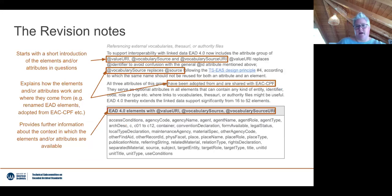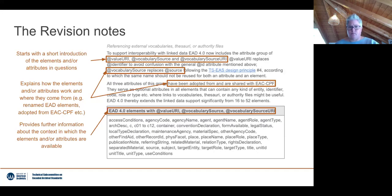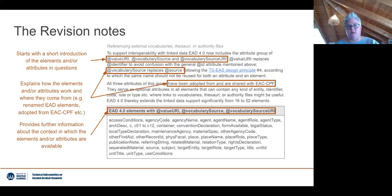For example, one chapter looks into referencing external vocabularies, thesauri, or authority files. Similar to the editorial, each chapter has a short introduction to the elements and attributes in question, explains how those elements work and where they come from — whether already in EAD 3, renamed, adopted from EAC-CPF, or from elsewhere — and provides further information about the context in which specific elements and attributes are available.